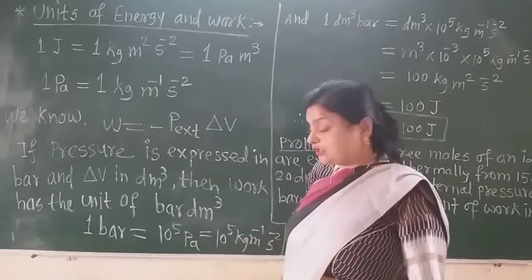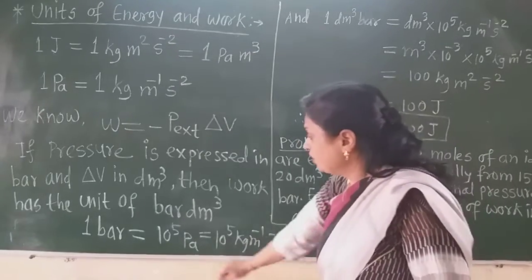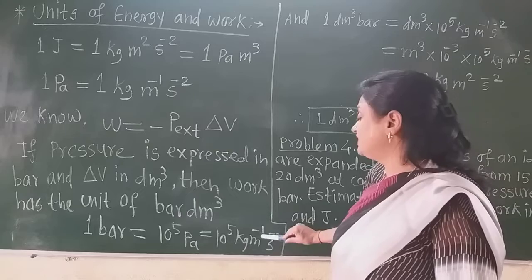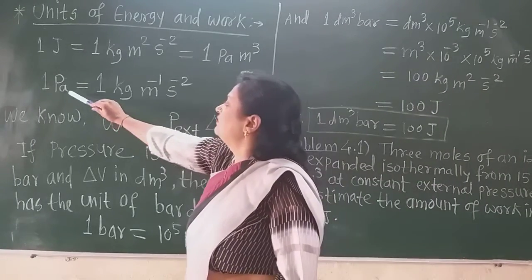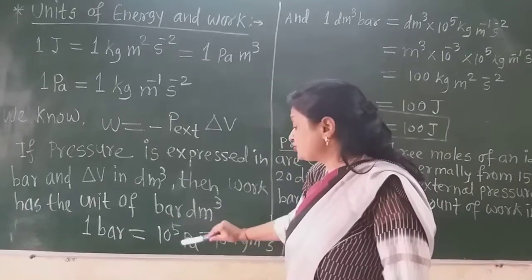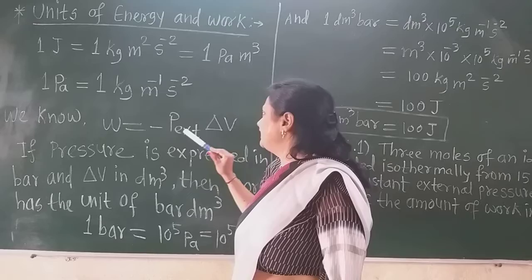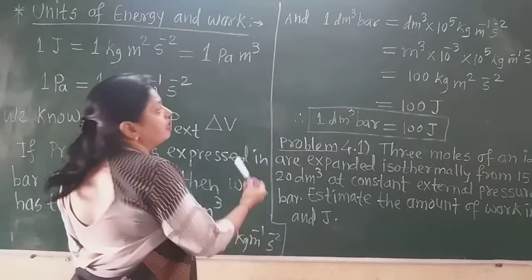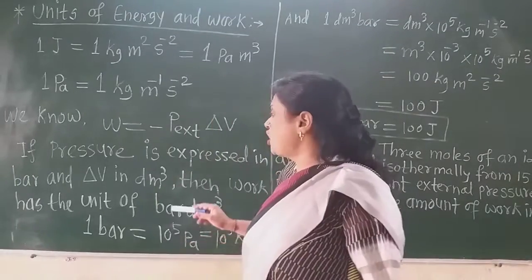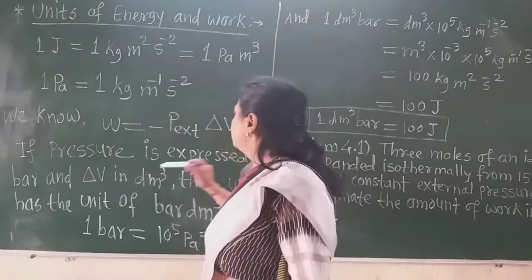1 bar equals 10 raised to 5 Pascals. If we substitute the value of Pascal as kilogram per meter per second squared, then 1 bar equals 10 raised to 5 kilogram per meter per second squared, because kilogram per meter per second squared is nothing but Pascal. Pascal equals 1 kilogram per meter squared per second squared. The unit of work here is bar times decimeter cube, because pressure is expressed in bar and volume in decimeter cube.